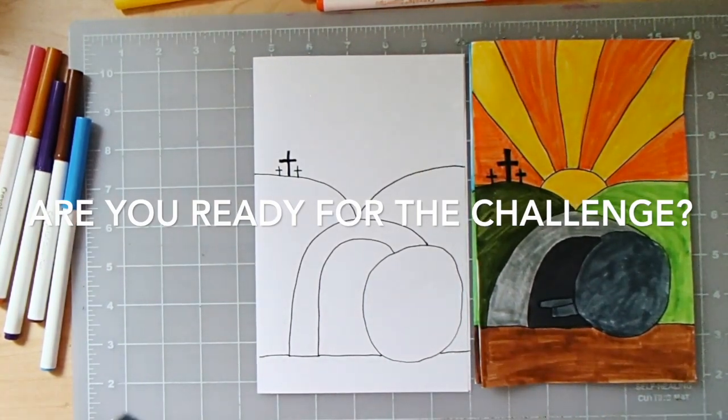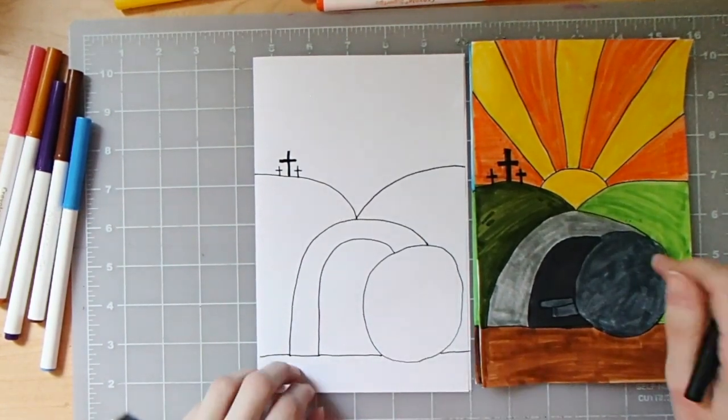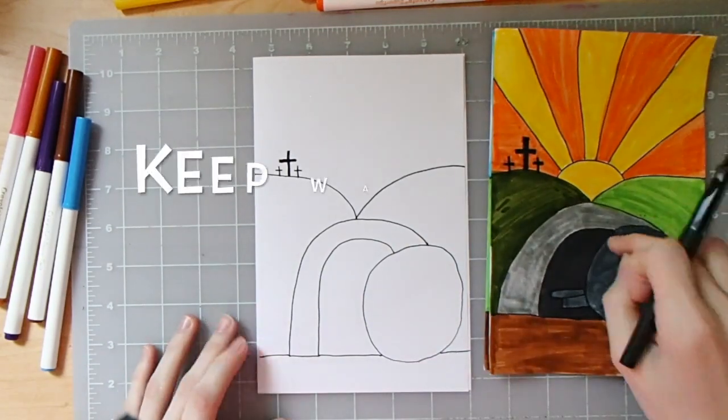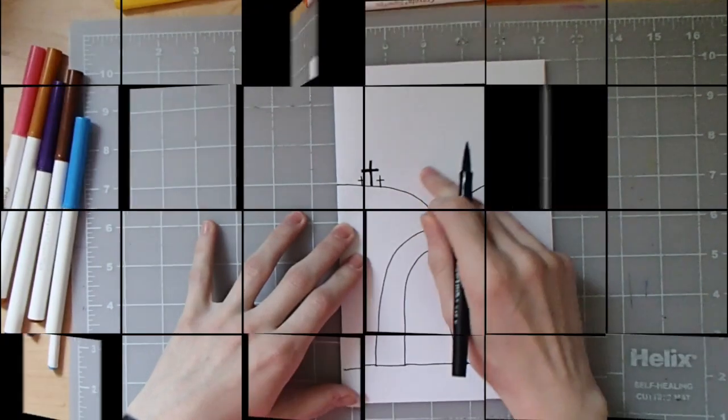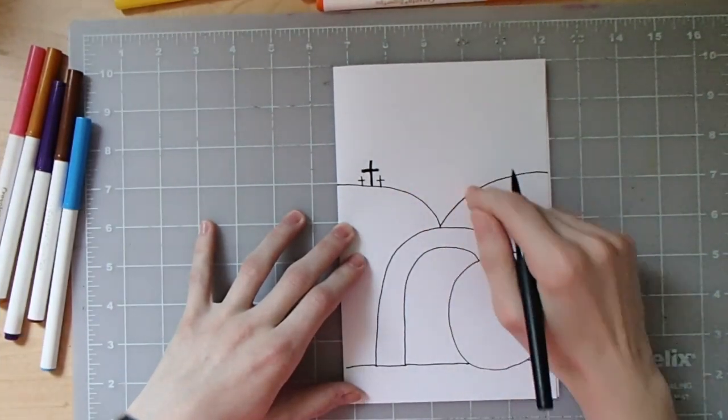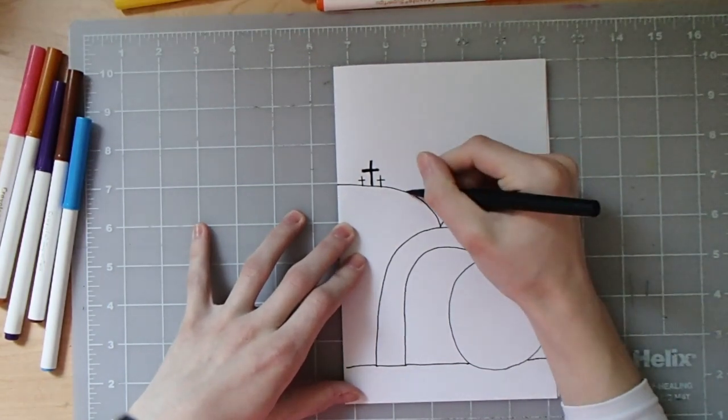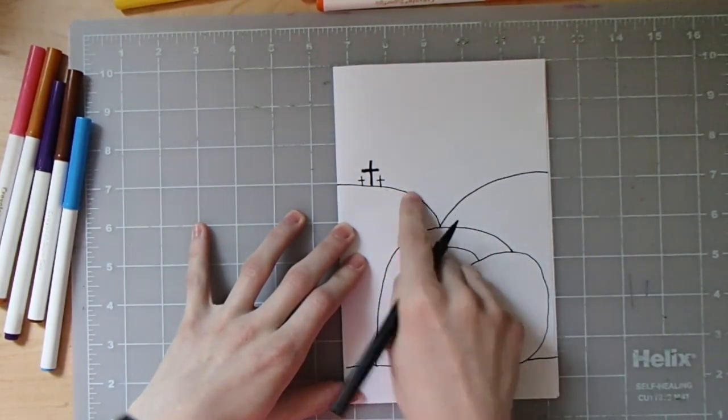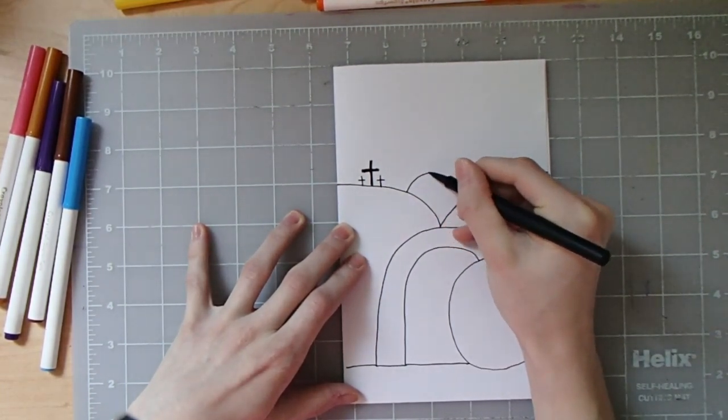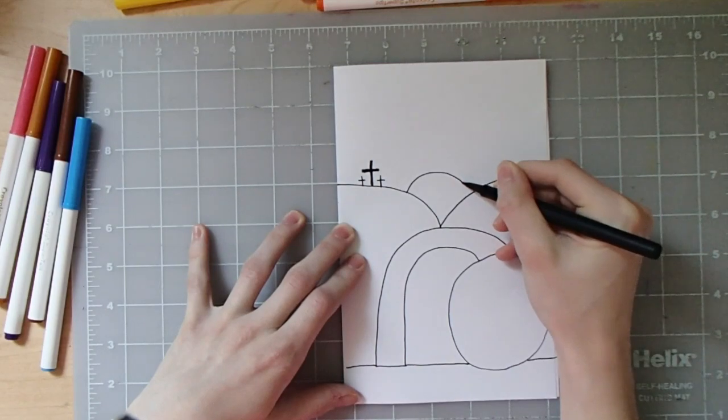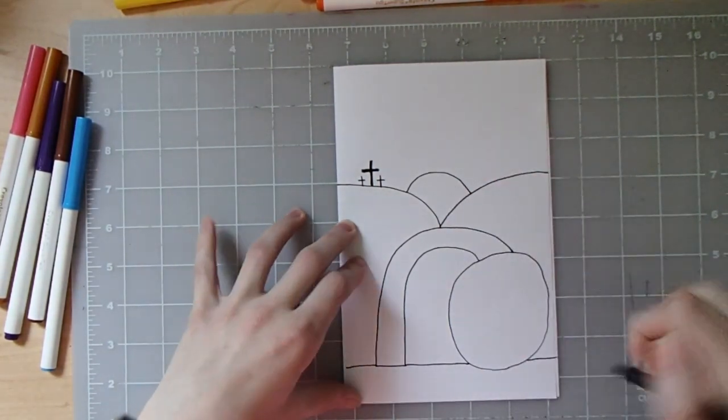If you're ready to start a hard mode Easter card and add some more detail to your Easter card, keep watching the video and I'll show you how I made this card. You're going to draw another curved line in the middle of your hills. This is going to be our sunrise. I'm going to take my pen and I'm going to find the middle of this hill. I'm going to draw a curvy line, kind of looks like another lowercase letter N. I'm going to stop at the other hill. This is going to represent our sun.